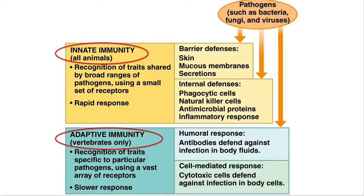Comparing immunity across animals: all immune animals have some form of innate immunity including barrier defenses, natural phagocytic cells like neutrophils, and inflammation. However, only vertebrates have adaptive immunity involving an antibody response, making vertebrates much more protected against infection than invertebrates.